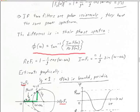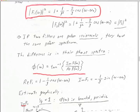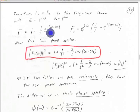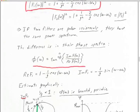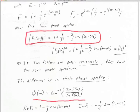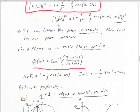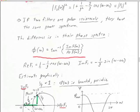Now let's look at F1 and F2. The real part of F1 is: 1 minus (1/rho)·cos(omega − omega₀). The imaginary part of F1 is: minus (1/rho)·sin(omega − omega₀). So if we graph this parametrically with omega as the parameter, what we're doing is tracing a circle of radius 1/rho. The circle is centered at 1 on the real axis.